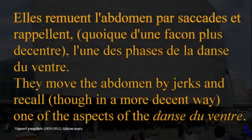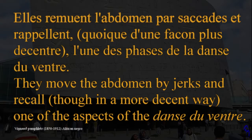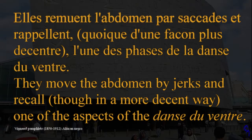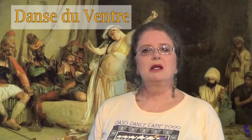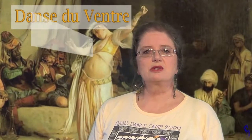For example, when describing a different style of dance, this is what they said: 'They move the abdomen by jerks and recall, though in a much more decent way, one of the moves of danse du ventre.' By 1864 the term had spread to mean any dance — not just Berber or African, but including Egyptian and Turkish — so Gérôme's dance of the Almeh was actually described as a danse du ventre.